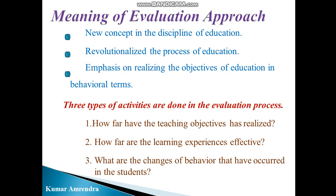The first activity is how far the teaching objectives have been realized. The second is how far the learning experience is effective, which means how far the students have learned the things which are taught to them. The third one is what are the changes of behavior that have occurred in the students. These three are the activities which must be done in the evaluation process.